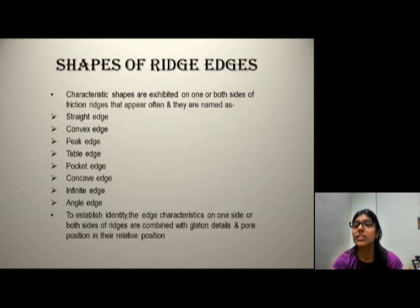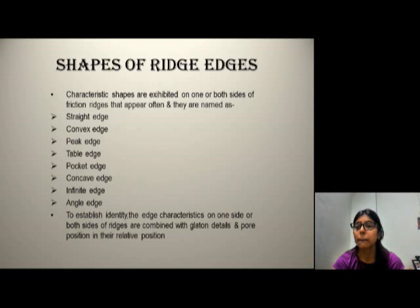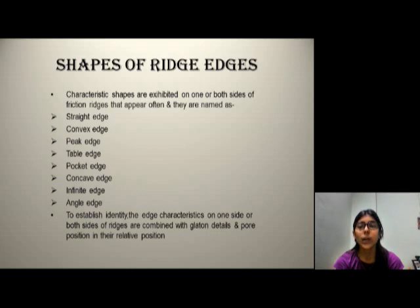Some of the ridge edge shapes and characteristic shapes are exhibited on both sides of the friction ridge. They are named as: straight edge, convex edge, peak edge, table edge, pocket edge, concave edge, infinite edge, and angle edge. To establish identity, the edge characteristics on one or both sides of the ridges are combined with gelatin details and pore position in their relative position.